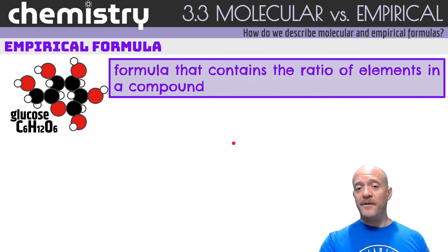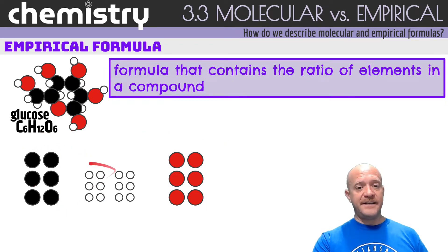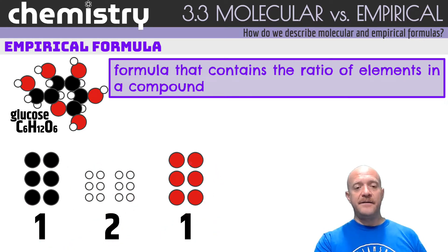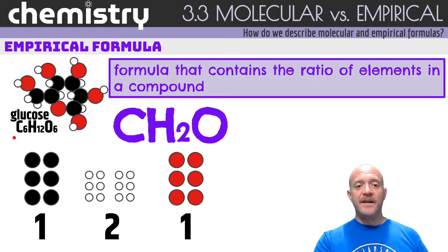Now the empirical formula is simply the ratio of the elements in a compound. So molecular formula indicates every single element that is accounted for. Empirical formula, basically you're simplifying it. So we have 6, 12, and 6, but here we have one part, two parts, and one part. In other words, if I took C6H12O6 and divided by what they have in common, they all have 6 in common, divide by 6. So the empirical formula is CH2O.